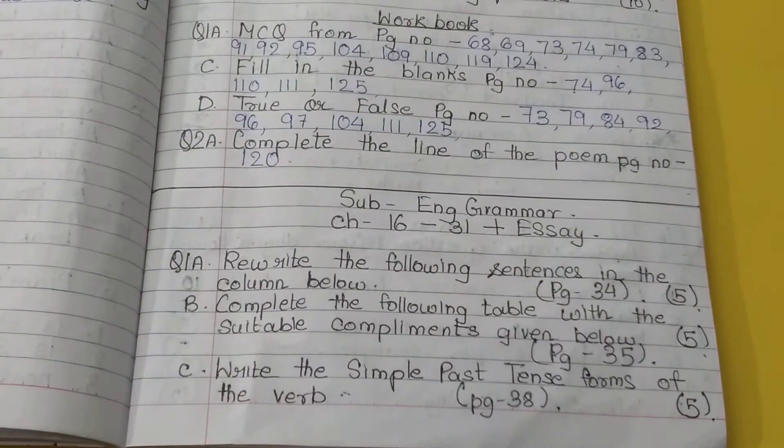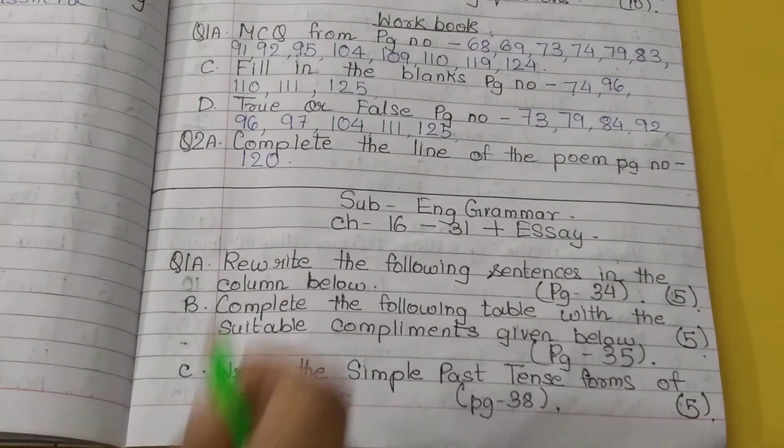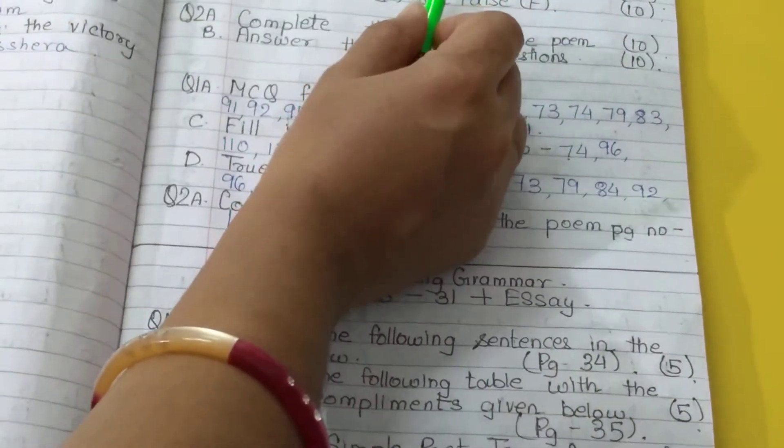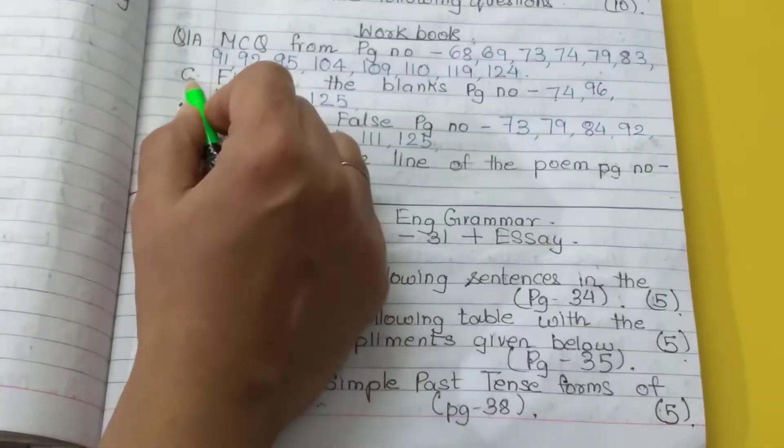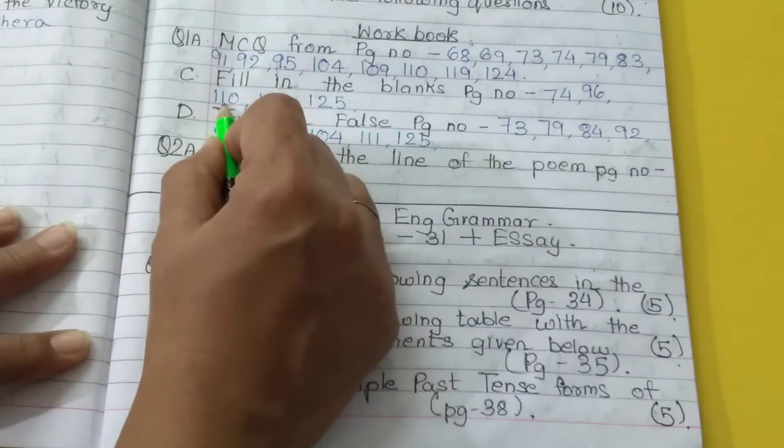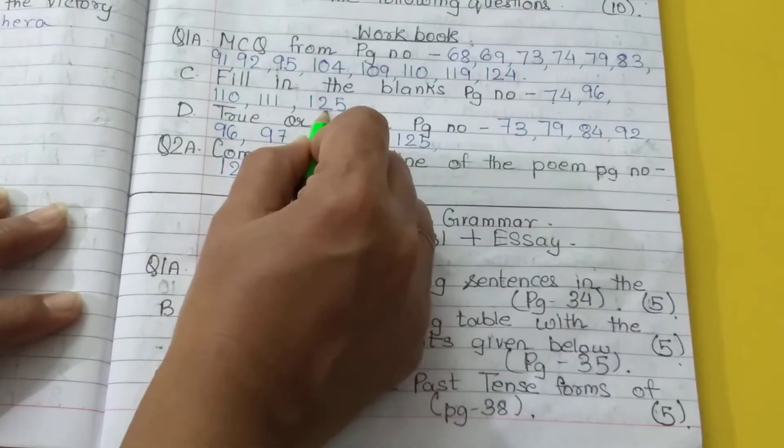After that, you have to write down fill in the blanks. Fill in the blanks from page number 74, 96, 110, 111, and 125.